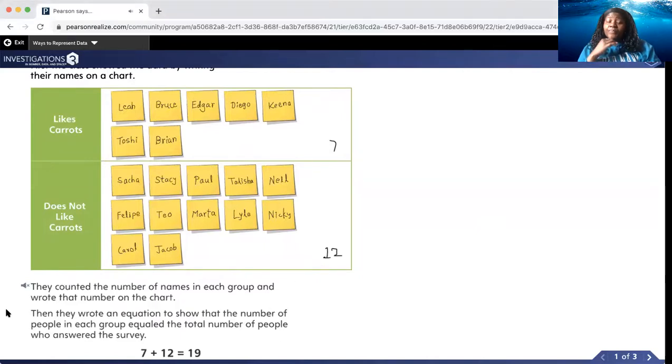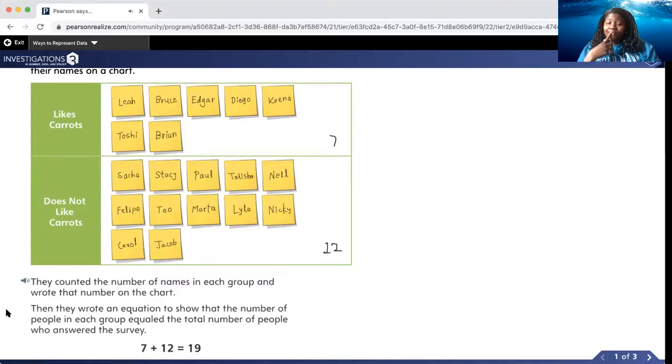They counted the number of names in each group and wrote that number on the chart. Then they wrote an equation to show that the number of people in each group equaled the total number of people who answered the survey. Seven plus twelve equals nineteen. So nineteen students in all were surveyed, okay?